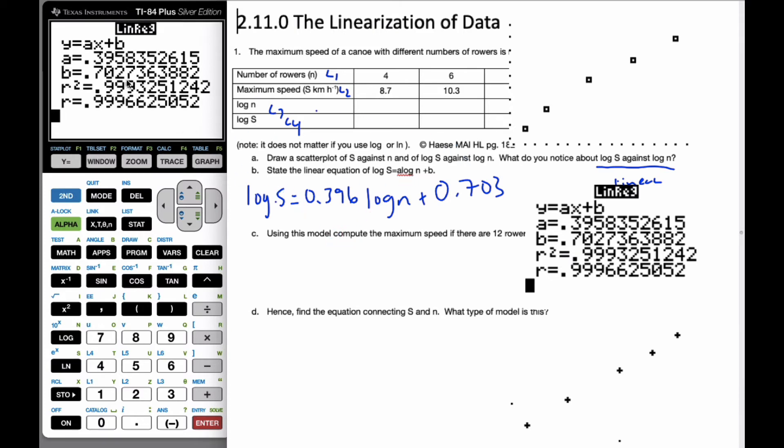Now, the calculator doesn't know that we've done logarithms. It has no idea. It just looks at numbers. So we have to keep track of the logarithms ourselves. Okay, so moving to part C, it says use this model, compute the maximum speed if there are 12 rowers. Well, N is my rower. So I'm going to take 12 and plug it in for N.